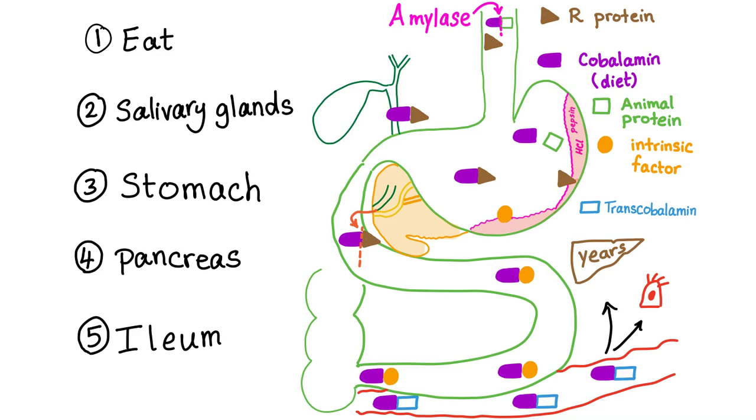Also, your salivary glands are amazing. They secrete something called the R protein. The R protein will protect the vitamin B12 from the gastric acid when it goes to the stomach. So now we are in the stomach.